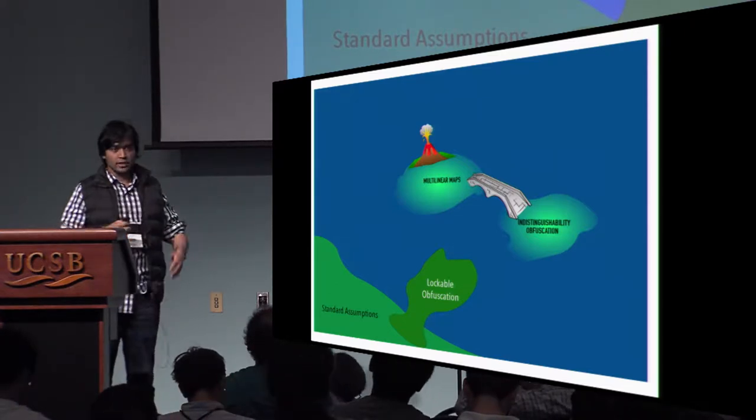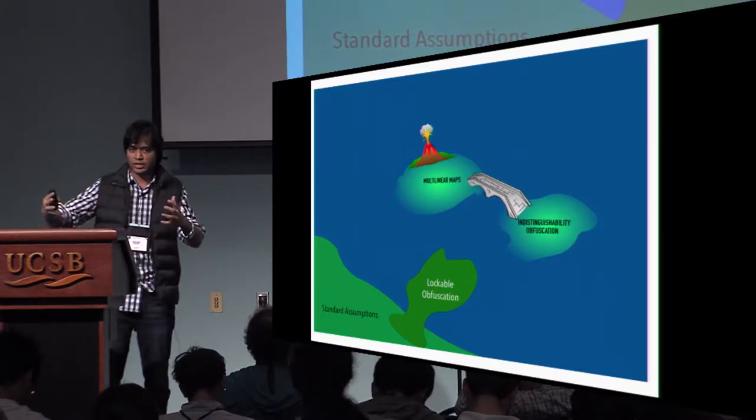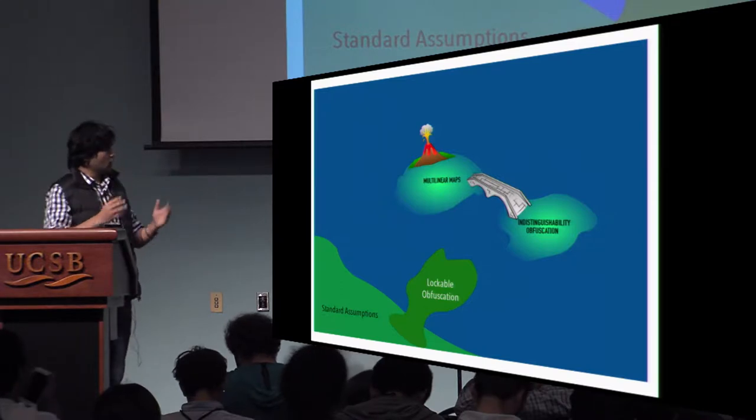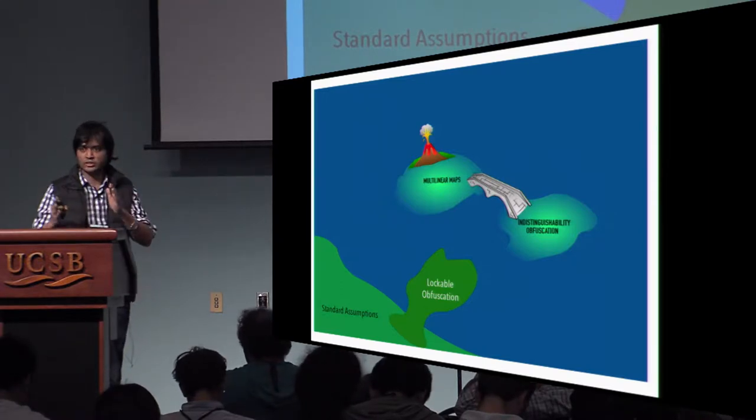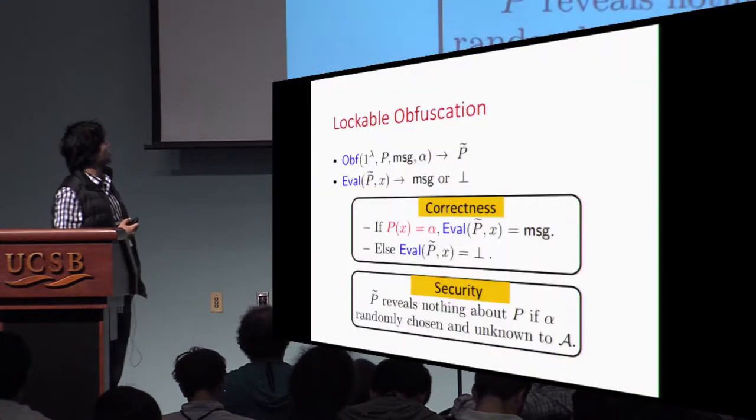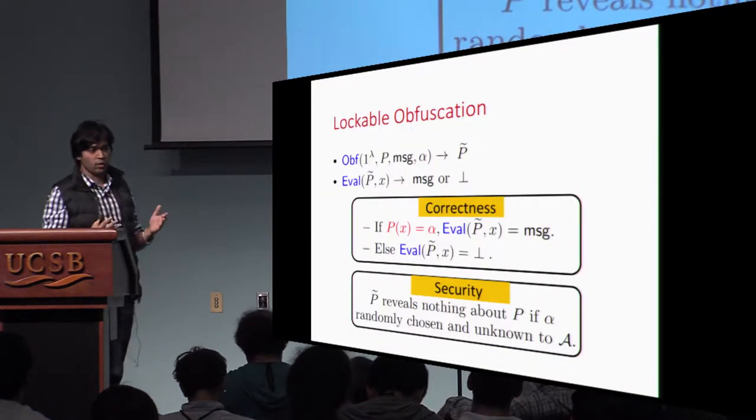To that end, we introduce a new primitive which we call lockable obfuscation, which is not general purpose obfuscation, but a very small and very short indistinguishability obfuscation type primitive for certain classes. And formally, let me first tell you what lockable obfuscation is.